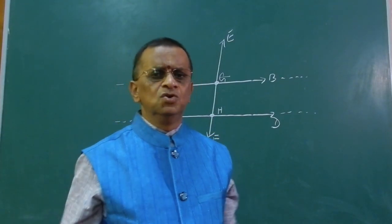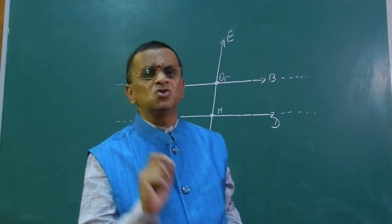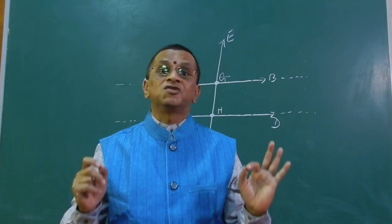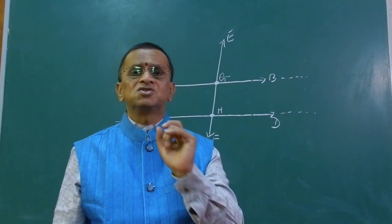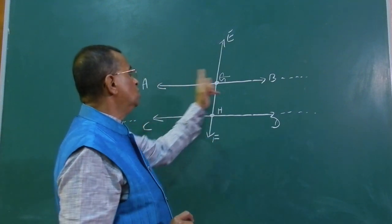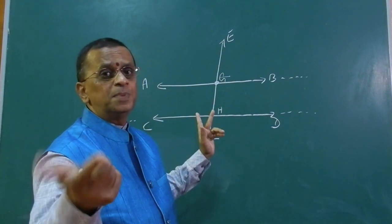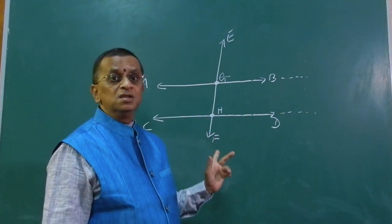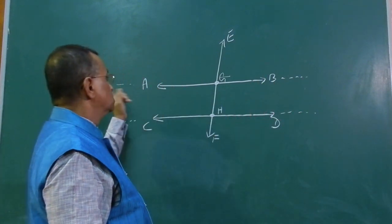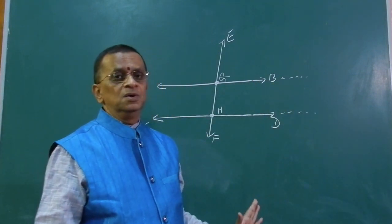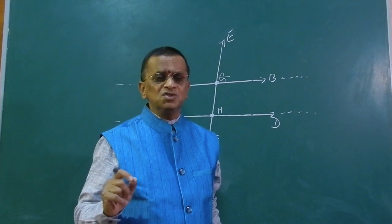Now let us know about a postulate. A postulate is a geometrical truth which can be proved by actual construction and measurement. Here is an example: two parallel lines AB and CD do not meet at any point even if they are produced on either side. This statement can be proved, but only by actual construction and measurement. If we produce them like this, they won't meet. These are called postulates.